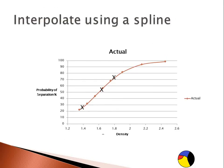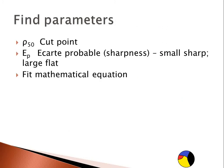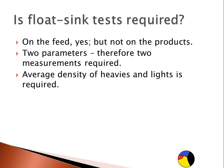Then you identify key parameters: where you've got 25% probability, 50%, and 75%. These are related to parameters used in the model, called the cut point and ecart probable, or sharpness. If ecart probable is small, it's sharp; if it's large, it's fairly flat. Once this is done, you can fit a mathematical equation. That's the conventional method.